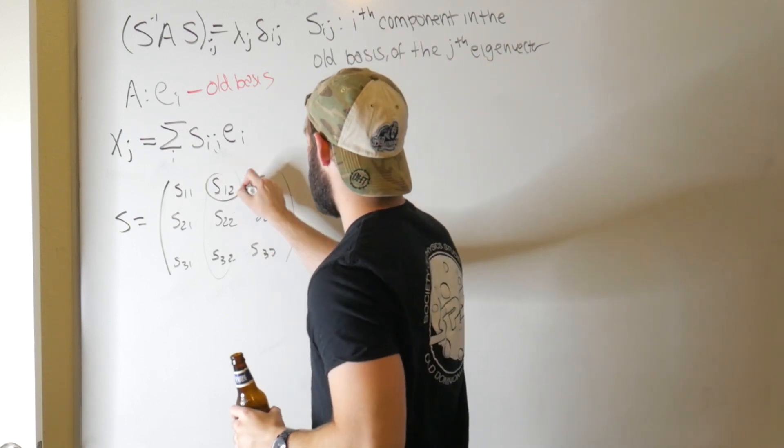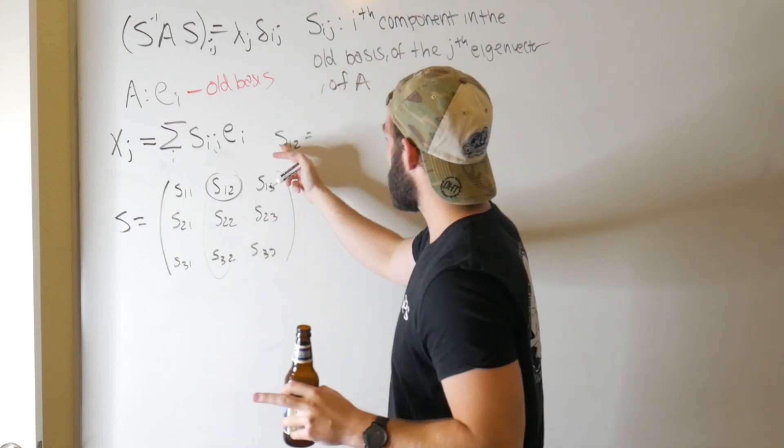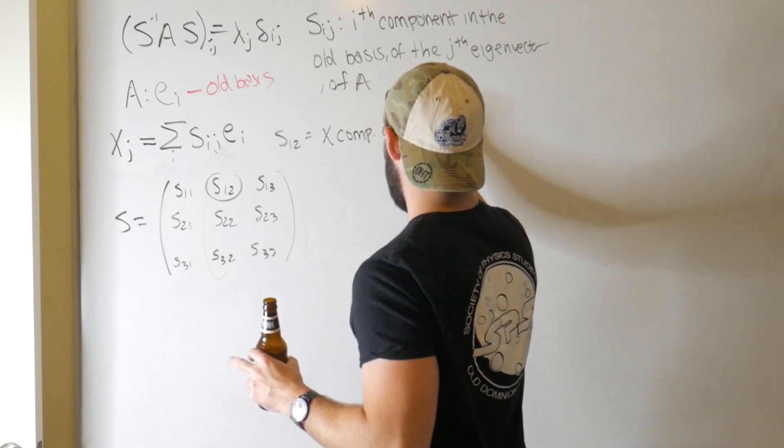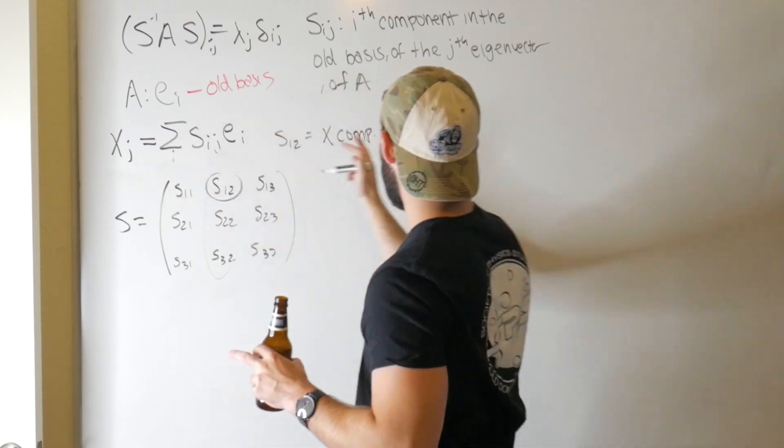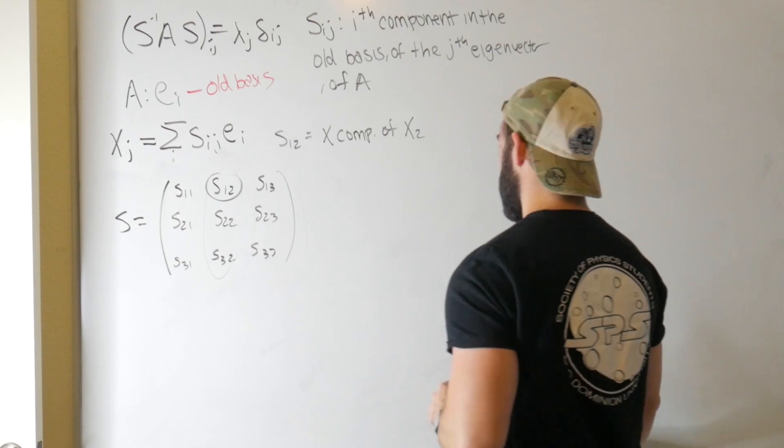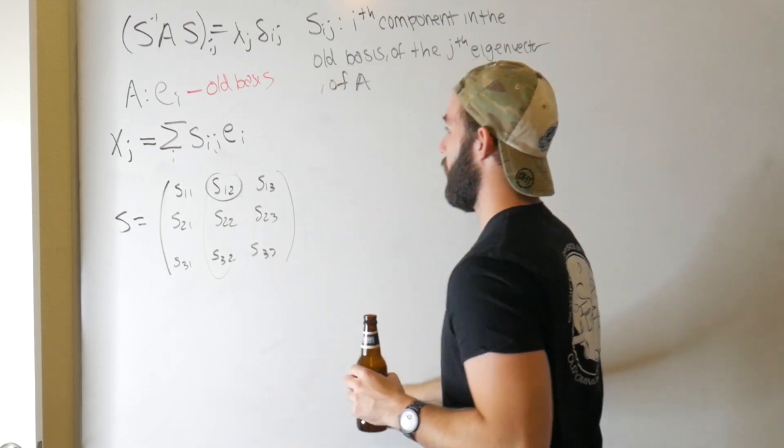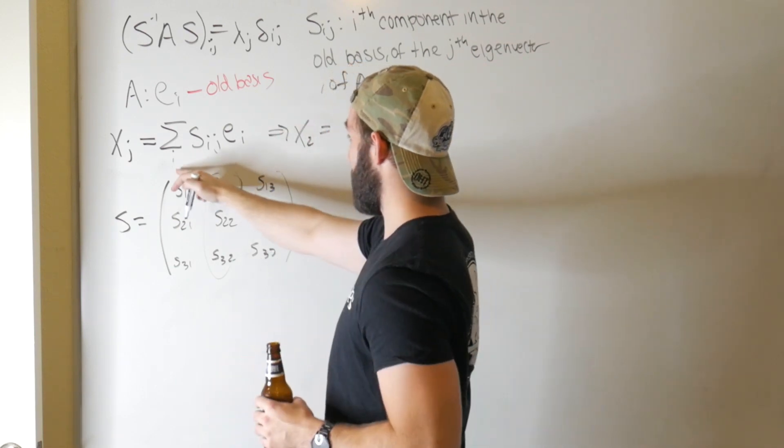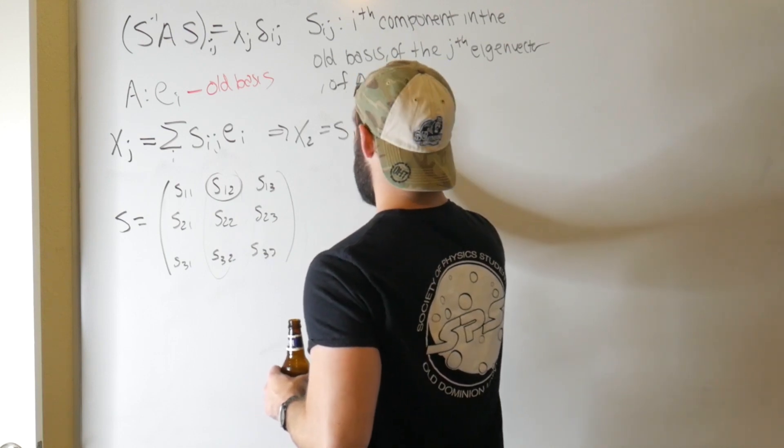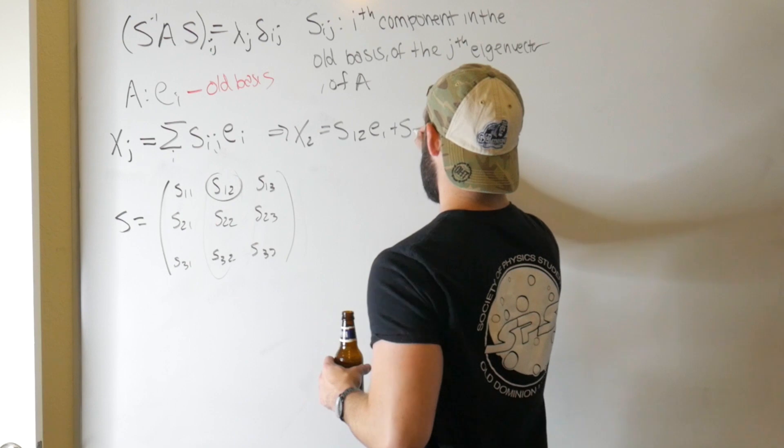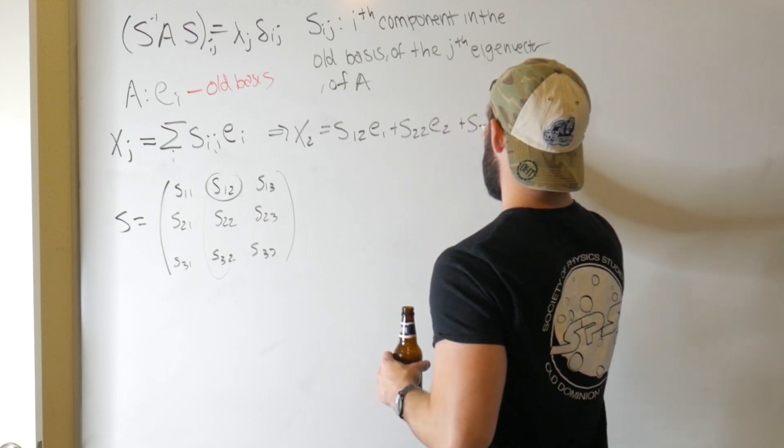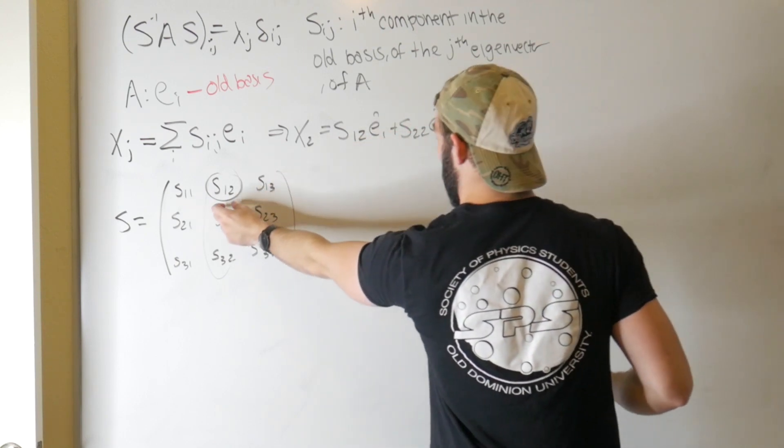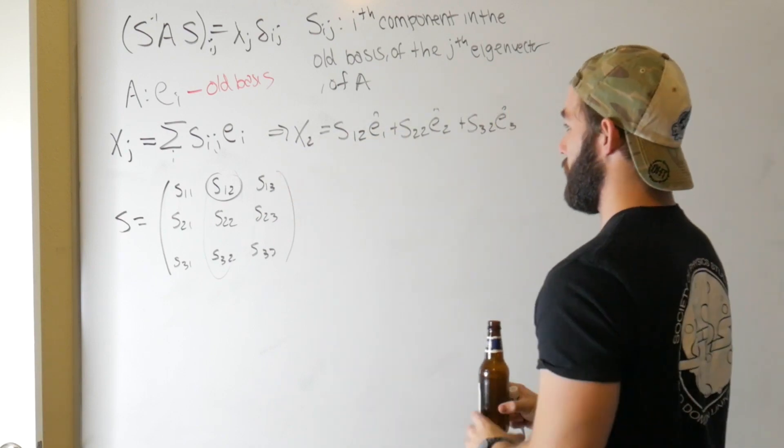So we're looking at the i-th component of the jth eigenvector. So say we're looking at S12, and say we're working in like Cartesian coordinates or something like that. S12 is just the x component of x2, right? x2, these are eigenvectors, it's the x component of this. Maybe we can expand this out just to be a little bit more clear. So say we want to talk about the second eigenvector of A. That would be x2. Well, we're still summing over i. So that's going to be S12 E1 plus S22 E2 plus S32 E3. Well, these are our old basis. So the x component of this, or 1, corresponds to the x component of this basis vector. There we go.